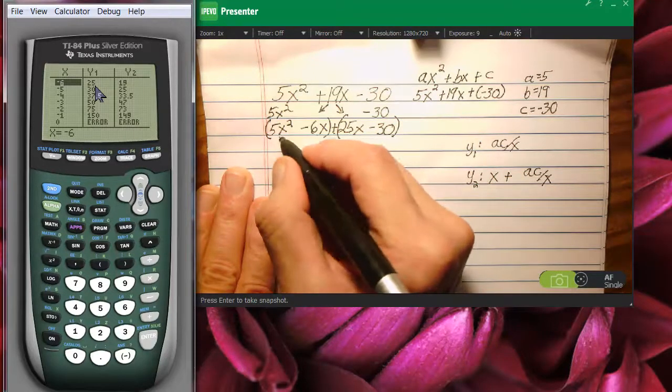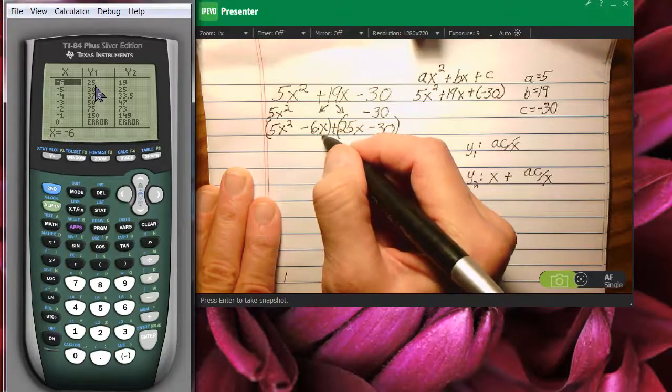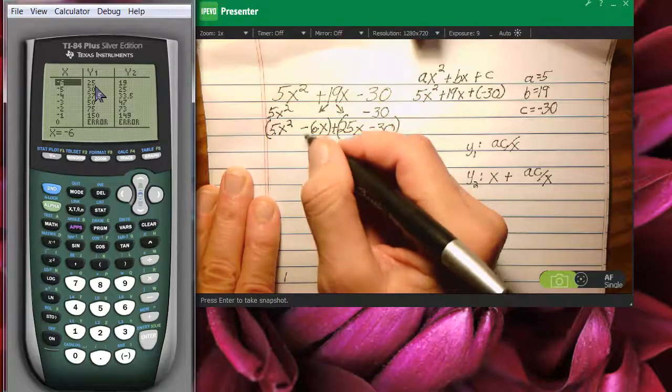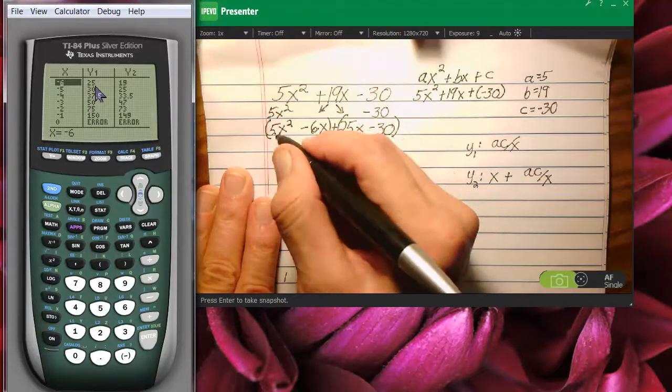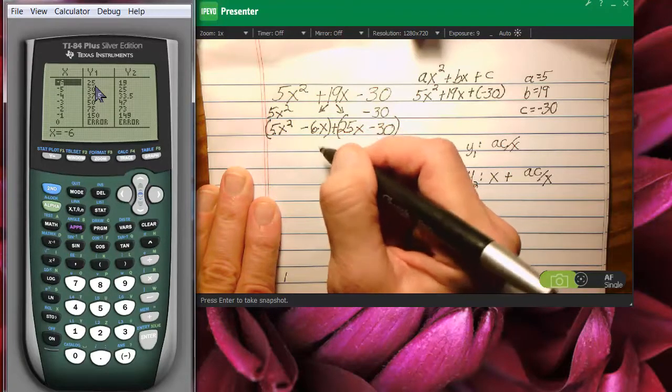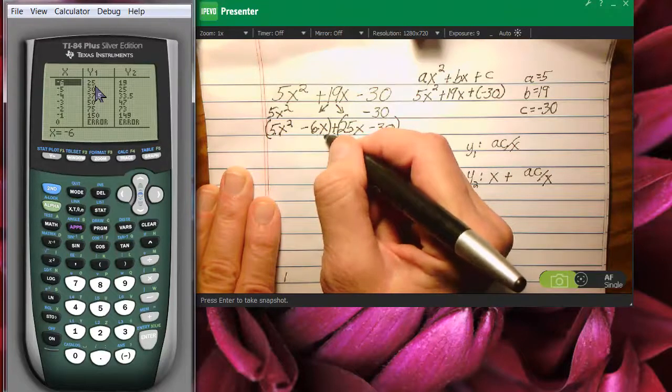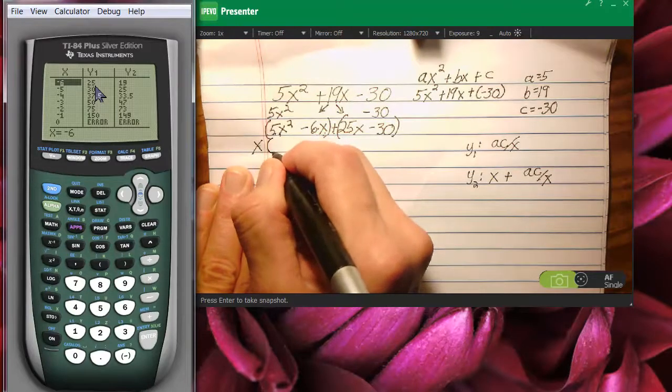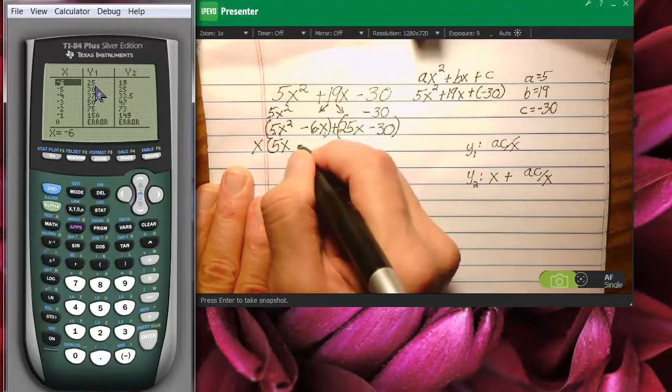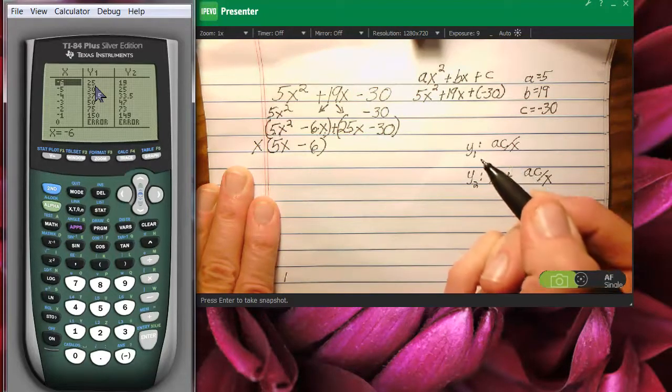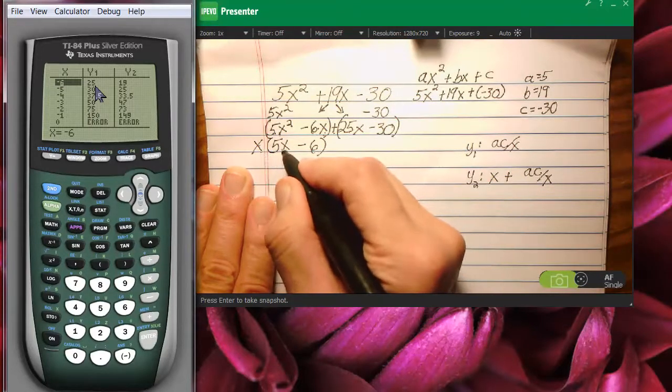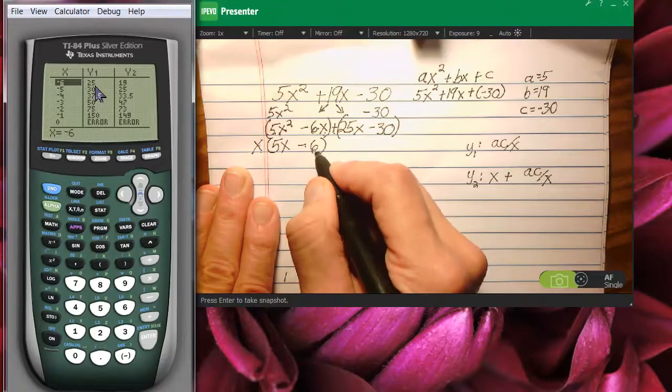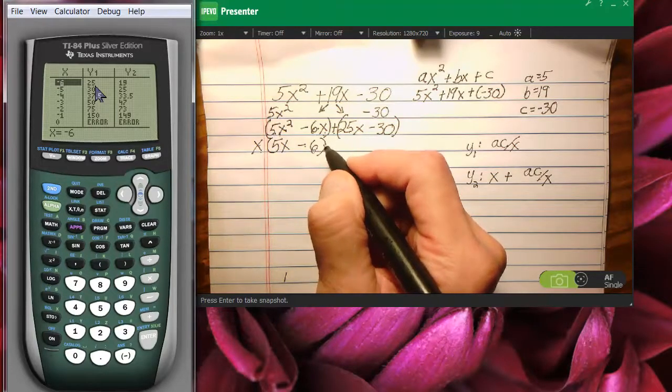Now, I am going to factor the first two terms here, the first set of parentheses, by the GCF. Notice that 5 and 6 are two different numbers with different factors, but both terms have x's in them. That's going to be my GCF, x. I pull x out to the front, which will leave me with 5x minus 6 on the inside of the parentheses. Now, double check yourself. X times 5x is 5x squared. That was correct. And x times negative 6 is negative 6x. And that was correct.